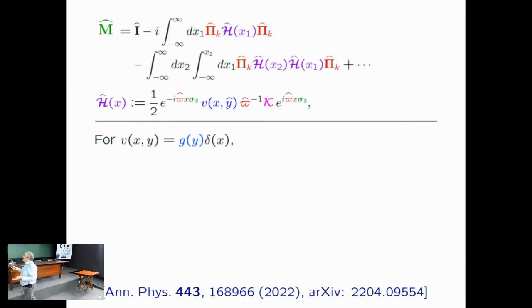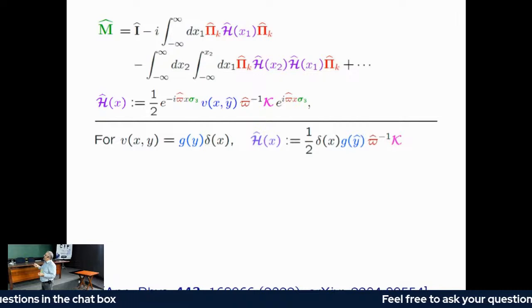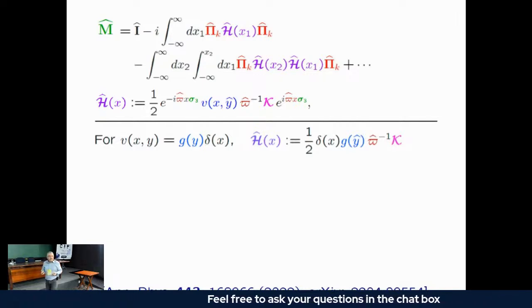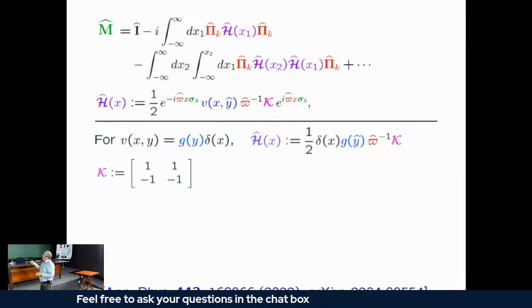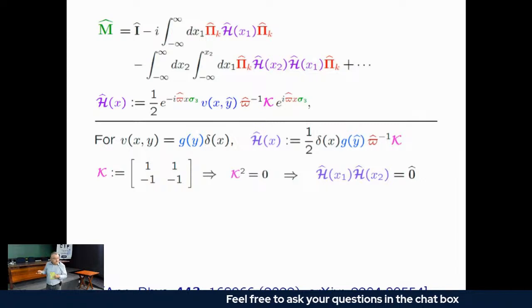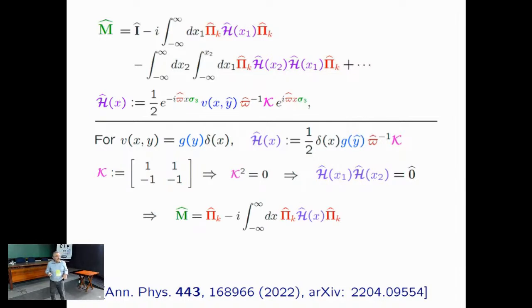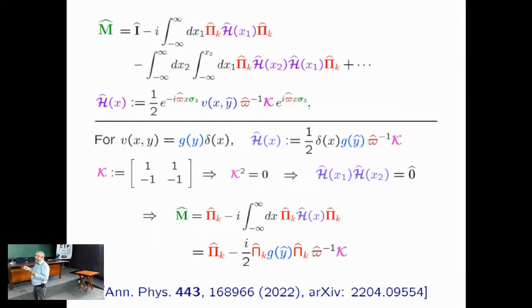As an example, take a potential of the form g(y) · δ(x). The delta function in x simplifies the calculation greatly: the x-dependent exponentials drop out, and you get a closed formula for the transfer matrix. Recalling that the matrix K has K² = 0, multiplying two copies of the Hamiltonian gives zero. This means the Dyson series truncates — all terms from H² onward vanish — so the transfer matrix is computed exactly from just the first two terms of the series.